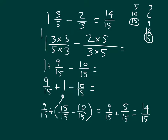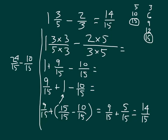Another way to have solved that: where we have 1 and 9 fifteenths, we could have made 1 and 9 fifteenths into an improper fraction of 24 fifteenths, and then subtracted 10 fifteenths from that. 24 fifteenths minus 10 fifteenths is already 14 fifteenths. So we took 1 and 9 fifteenths after we made denominators the same and rewrote it as an improper fraction to be able to subtract. That would work as well.